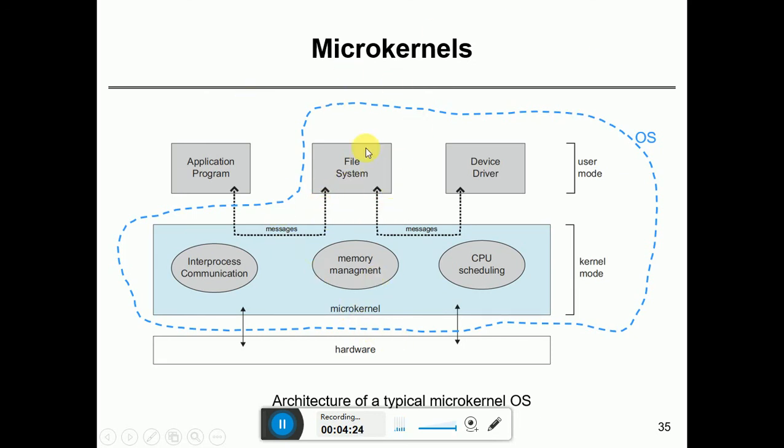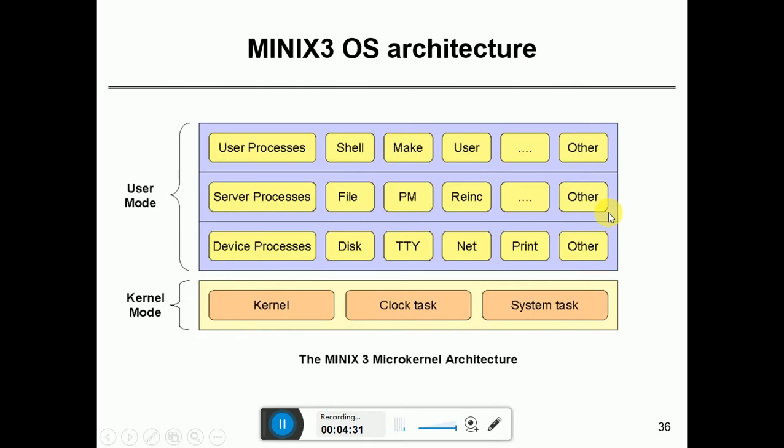The complexity has decreased and dealing with it is easy. Since less is in the kernel, it is easier to find modifications, changes, errors or bugs. This is a diagrammatic representation of the architecture of the microkernel system structure.